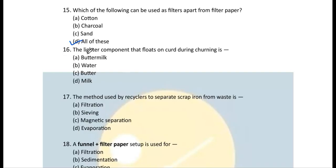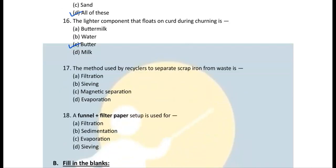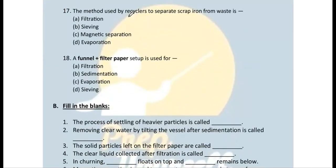Question 16: The lighter component that floats on curd during churning — correct answer is butter. When you churn the curd, you get butter which floats on top, and at the bottom we have buttermilk.